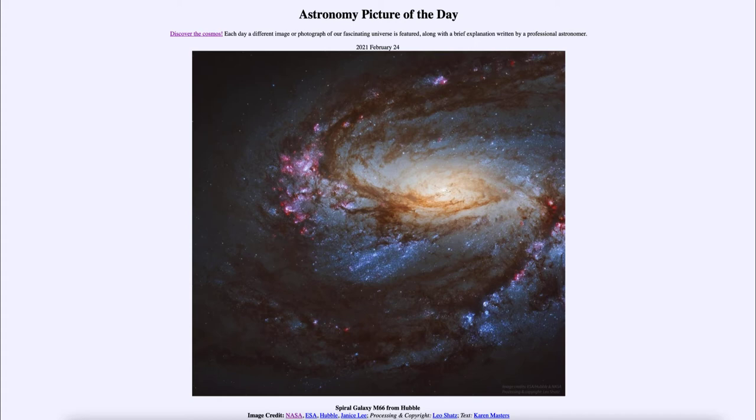And today's picture for February the 24th of 2021, well, it is titled Spiral Galaxy M66 from Hubble. So what do we see here? Well, this is an example of a spiral galaxy.